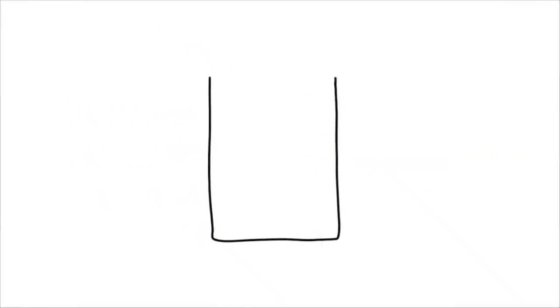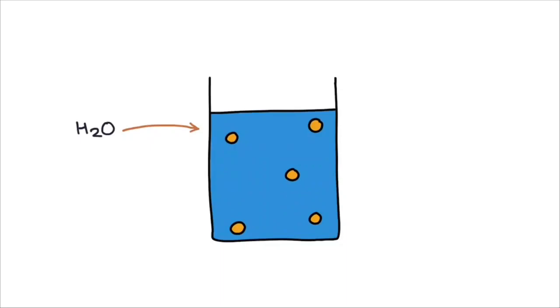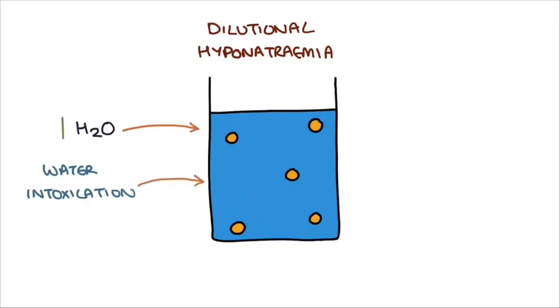If you imagine this container contains a fixed amount of sodium, the sodium concentration can be altered by the water going in. If you add water to it, then the sodium becomes more dilute, and as a result you develop hyponatremia. We call this dilutional hyponatremia. This can be achieved by drinking more water, and we call this water intoxication when too much water dilutes the blood and causes a dilutional hyponatremia.